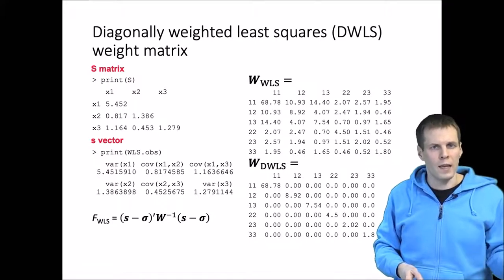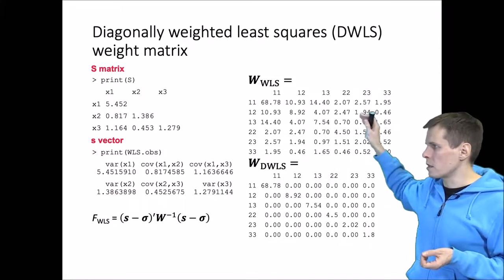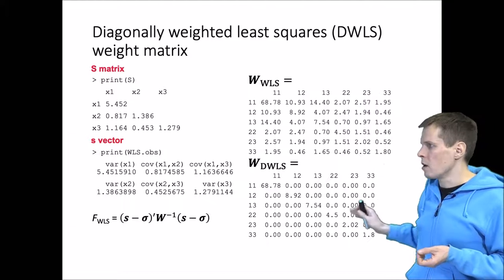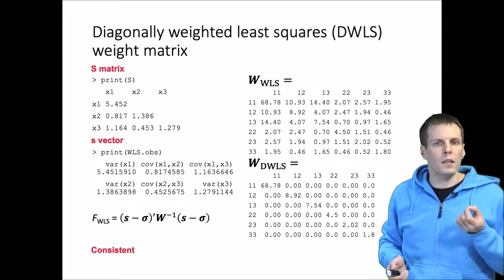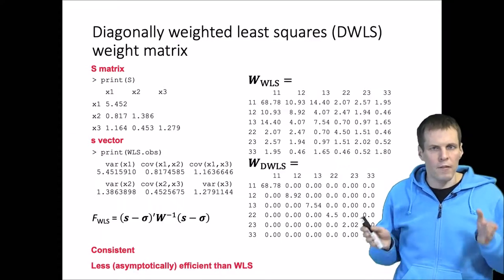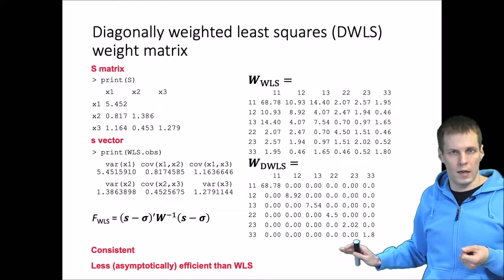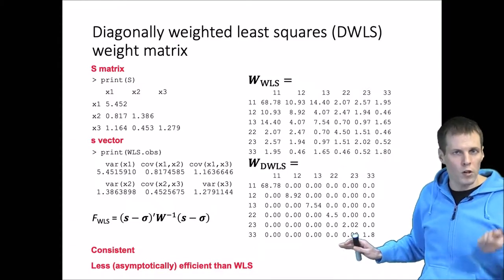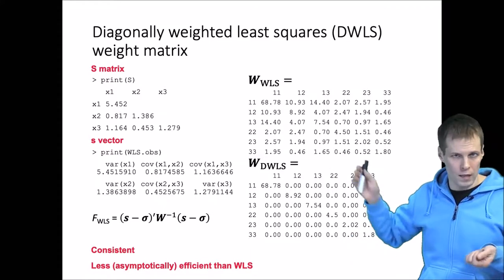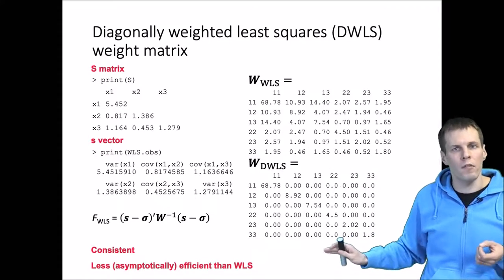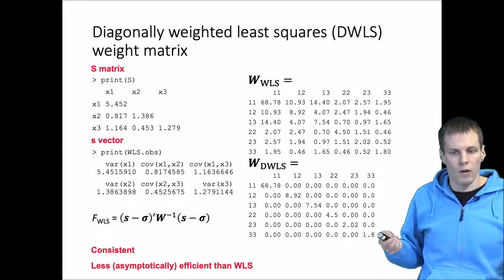The diagonally weighted least squares estimator applies the same idea by estimating from data without assuming any distribution, but simply takes the diagonal of the ADF weight matrix. The DWLS estimator has been proven to be consistent, though it is less efficient in very large samples. In practice, however, DWLS works a lot better in small samples than the full WLS weight matrix, and it is actually very commonly used with categorical data when sample size is not very large.